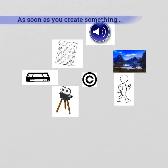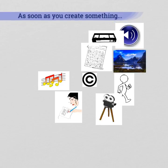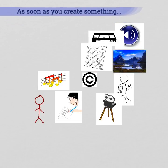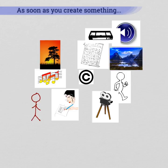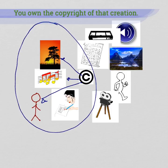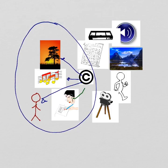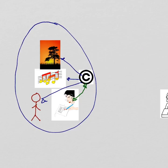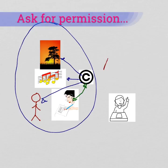As soon as you create something like the lyrics of a song, a drawing of a figure, or a photograph of a scene, you immediately and automatically have the copyright of your creation. Ideally, anyone who wants to use your creation should have your permission before using it in any way, with the exception of certain cases.